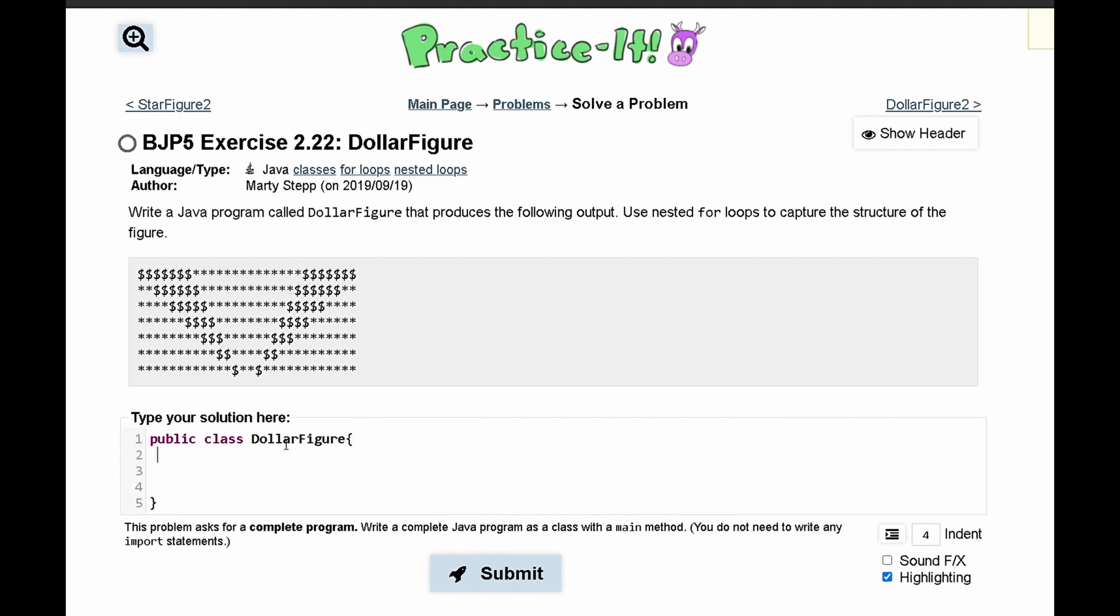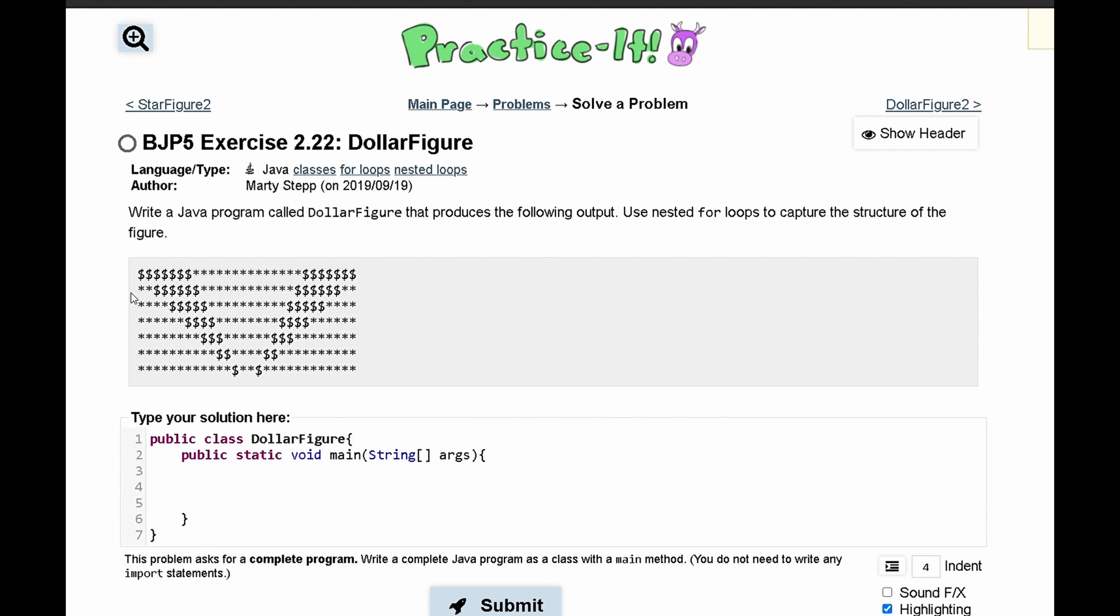We'll start by writing our class and now we can start writing our for loop. We notice that we first have these stars, then we have these money symbols, and then we have more stars, money symbols, and then stars again.